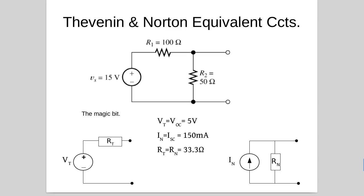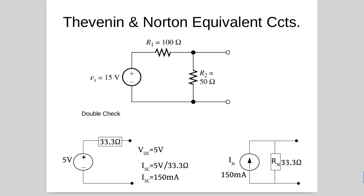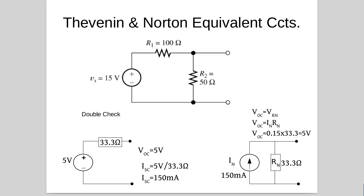We now have all three values: open circuit voltage of 5 volts, short circuit current of 150 milliamps, and internal resistance of 33.3 ohms, and we can build either circuit. For the Thevenin circuit, 5 volts is the voltage supply with 33.3 ohms as the series resistance. For the Norton circuit, 150 milliamps is the current source with 33.3 ohms in parallel. Both circuits produce the same open circuit voltage of 5 volts and the same short circuit current of 150 milliamps.